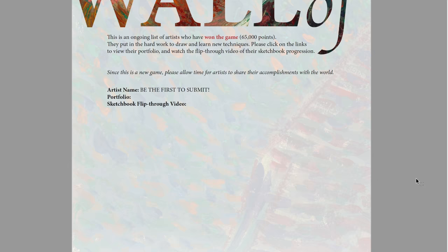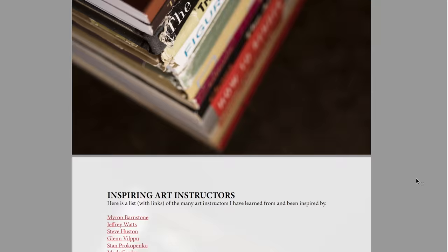Once you win — how you win is you earn 65,000 points, which isn't that much if you're already drawing and getting better. It's definitely enough to get the feel for drawing, the feel for these techniques, and be confident in your work and share it. How you win is you get 65,000 points, then do a video flip-through of your sketchbook to share with everybody. Your name goes in permanently with a link to your sketchbook flip-through video, and you get a certificate of achievement emailed to you. I also list a lot of inspiring art instructors, videos, and books.